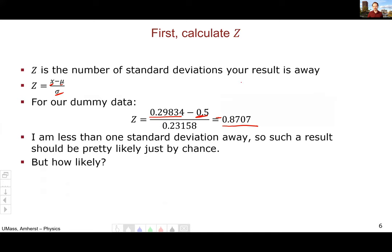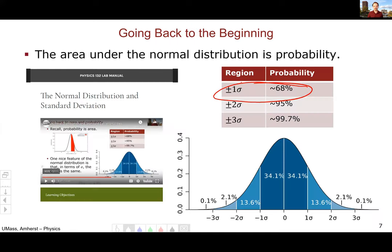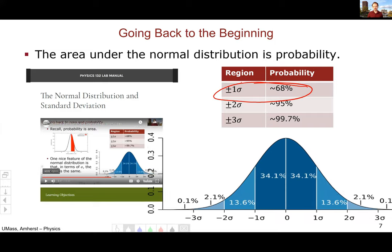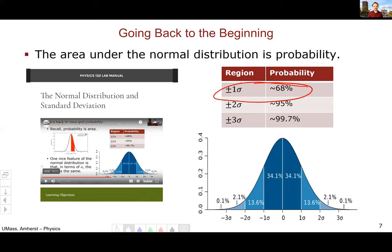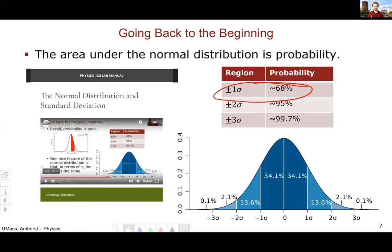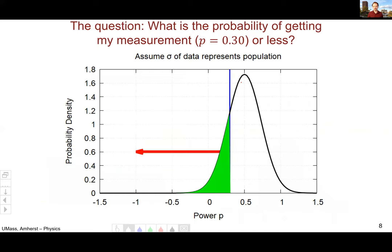And we also mentioned that one of the properties of the normal distribution is that if you measure in standard deviations, then the probability doesn't change, because I can either stretch the standard deviation or squeeze it. It doesn't matter in terms of standard deviations. All of these probabilities remain the same. So since area is probability, if I want to know the probability of measuring a power of 0.30 or less, then I need to know the area under this Gaussian all the way from negative infinity up to 0.30.